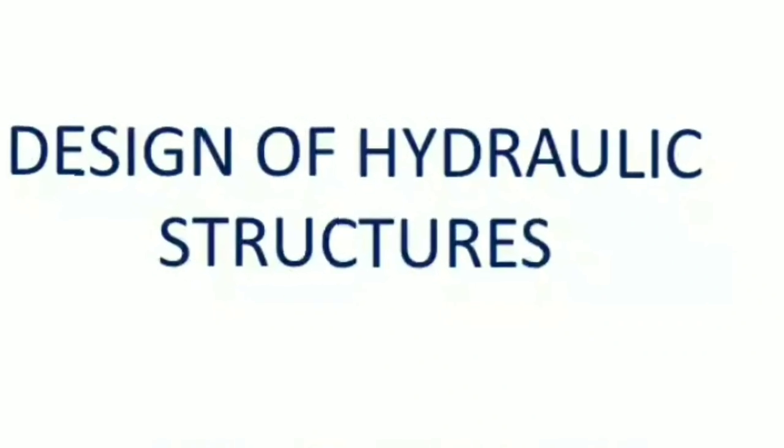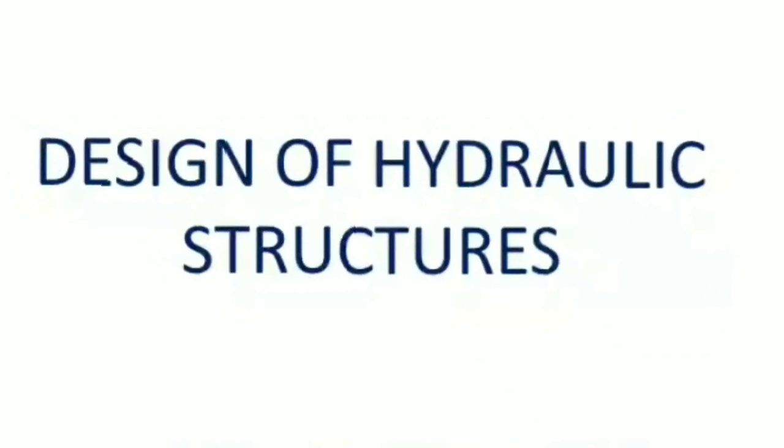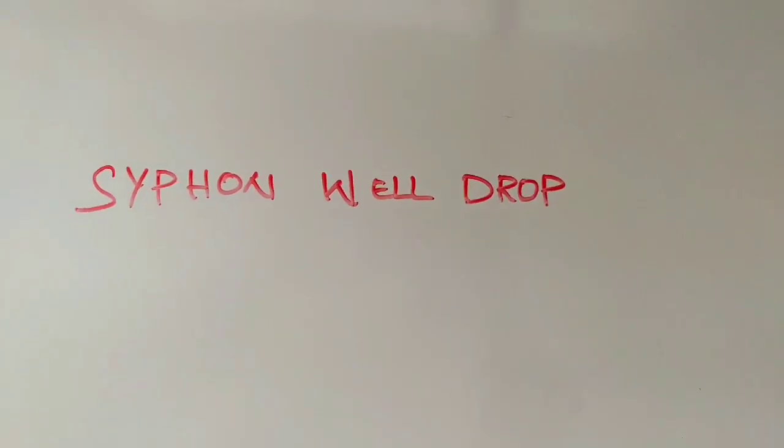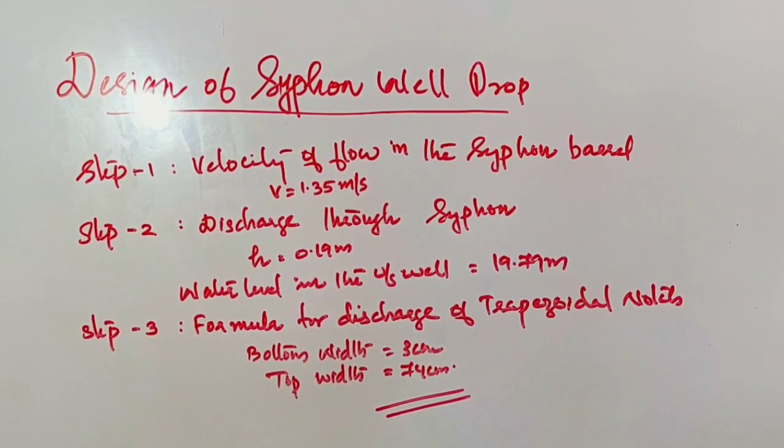Hello everyone, design of hydraulic structures and this siphon well drop. In the previous classes we discussed the design of siphon well drop. Step one: velocity of flow. Step two: discharge. And step three: formula for discharge of trapezoidal nose, with bottom width calculated as 3 centimeters and top width as 74 centimeters.